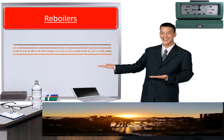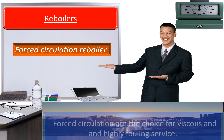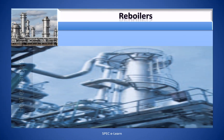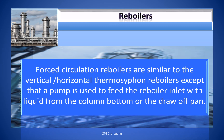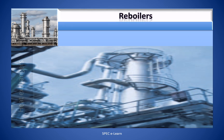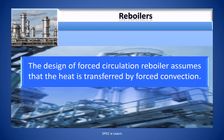Forced Circulation Reboilers. Forced circulation reboilers are the choice for viscous and highly-fouling service. They are similar to the vertical thermosyphon reboilers, except that a pump is needed to feed the reboiler inlet with liquid from the column bottom or the draw-off pan.